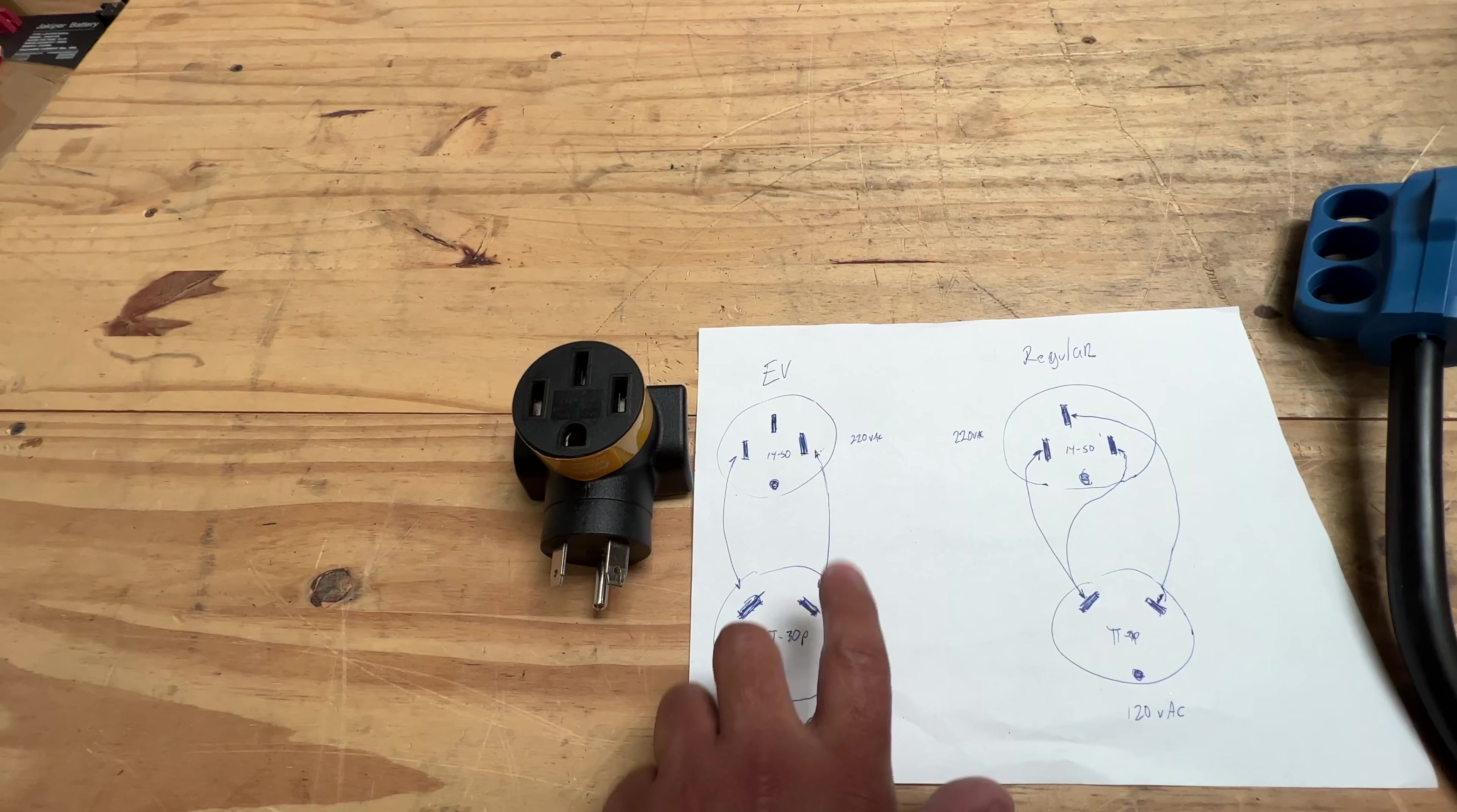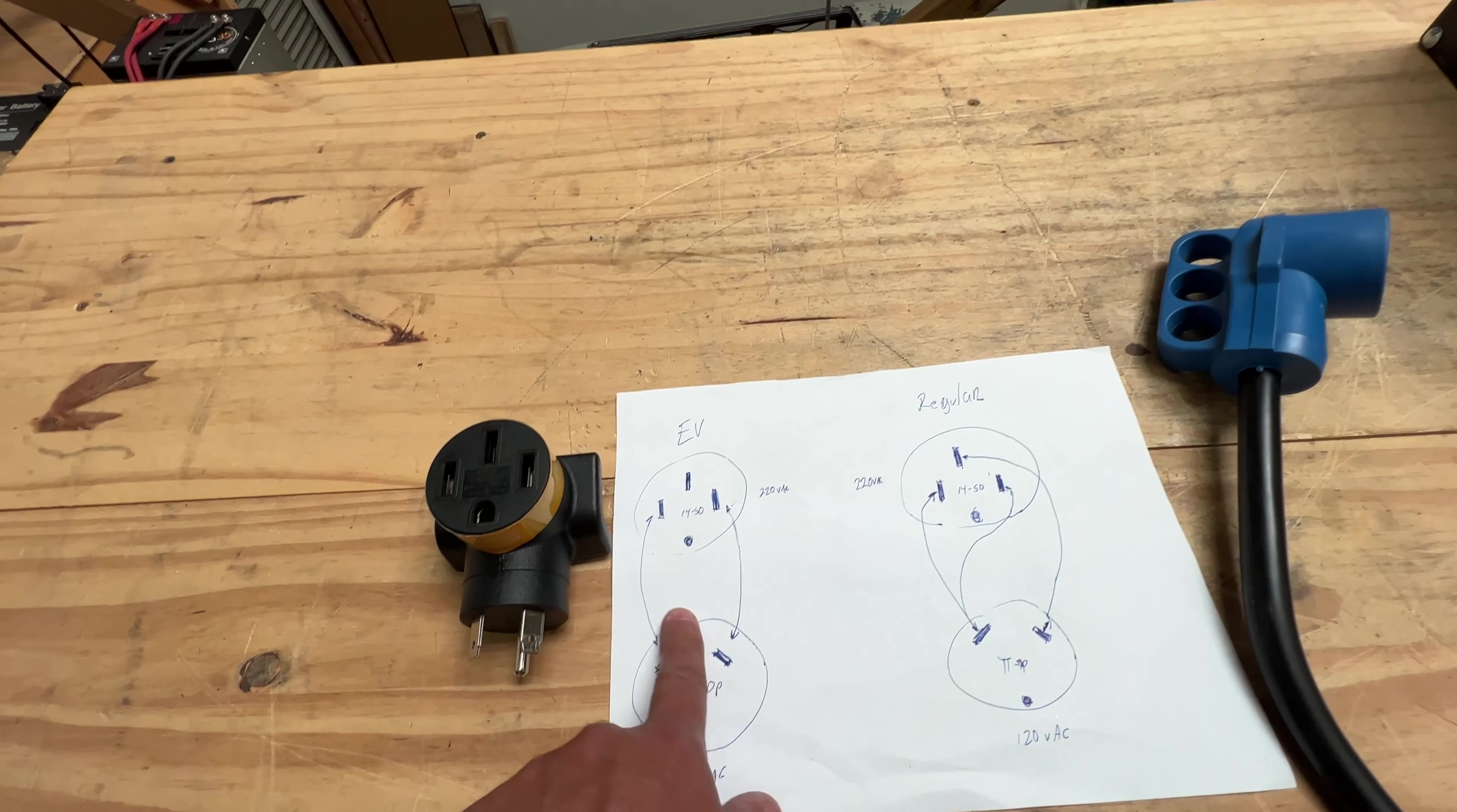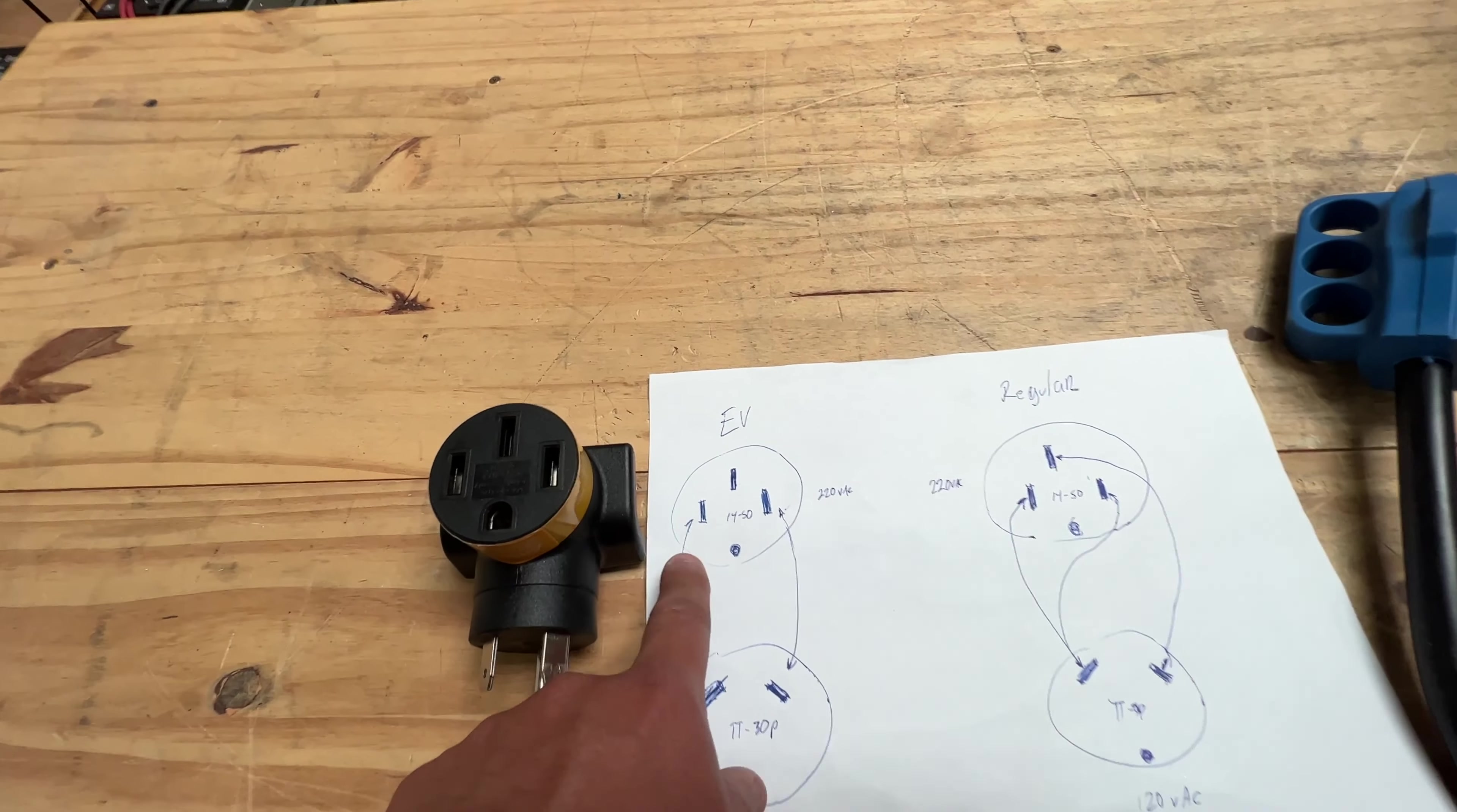On the EV one, what they do is they get both the neutral and the hot—because this one has a neutral and hot since it's only half the voltage—and they decide to put the neutral onto one pin, one of the hot legs, and then the hot leg into the other hot leg.